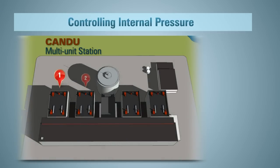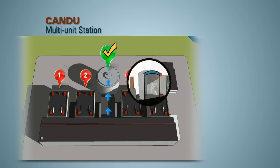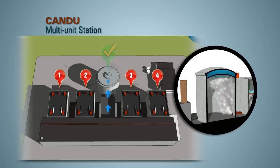In a multi-unit station, pressure is lowered by releasing steam and hot gases from the reactor building. The vacuum building is a structure specifically designed to quickly and safely lower pressure inside the reactor buildings. Both systems work without power.